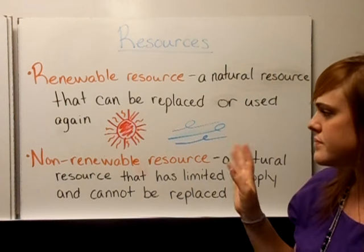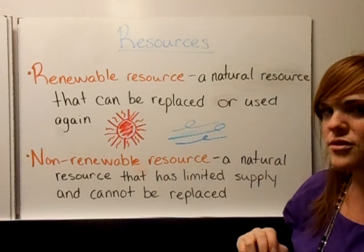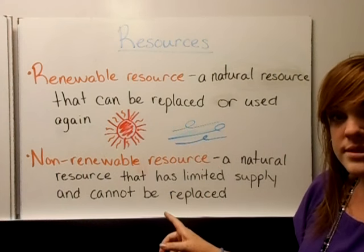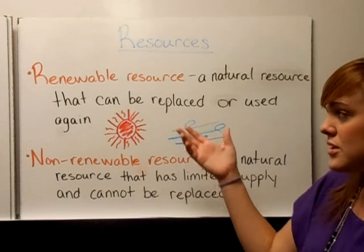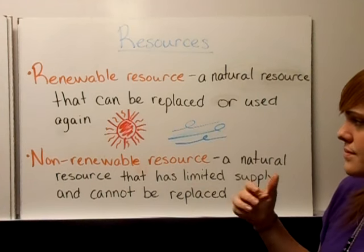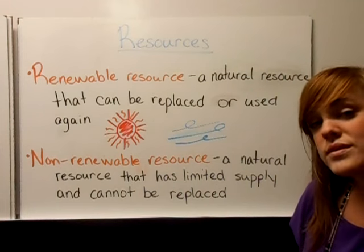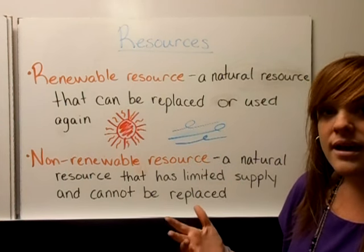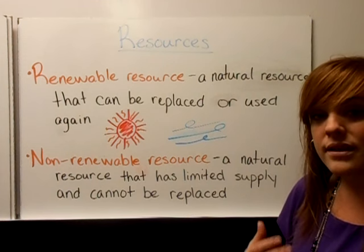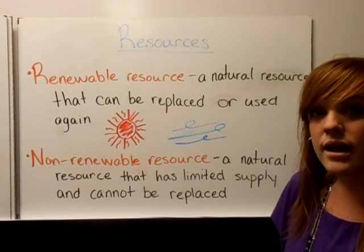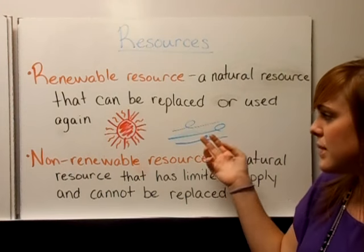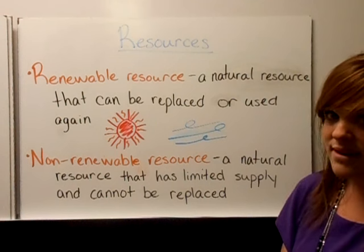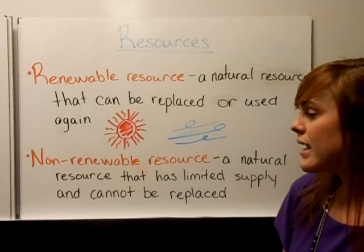Now a little bit more about resources — you do need this on your foldable, so pause again and write down the definitions. A renewable resource is a natural resource that can be replaced or used again, such as solar power, wind power, and wood or timber, since we can plant trees for every tree we cut down. A non-renewable resource is a natural resource that has a limited supply — once it's gone, it cannot be replaced or renewed.